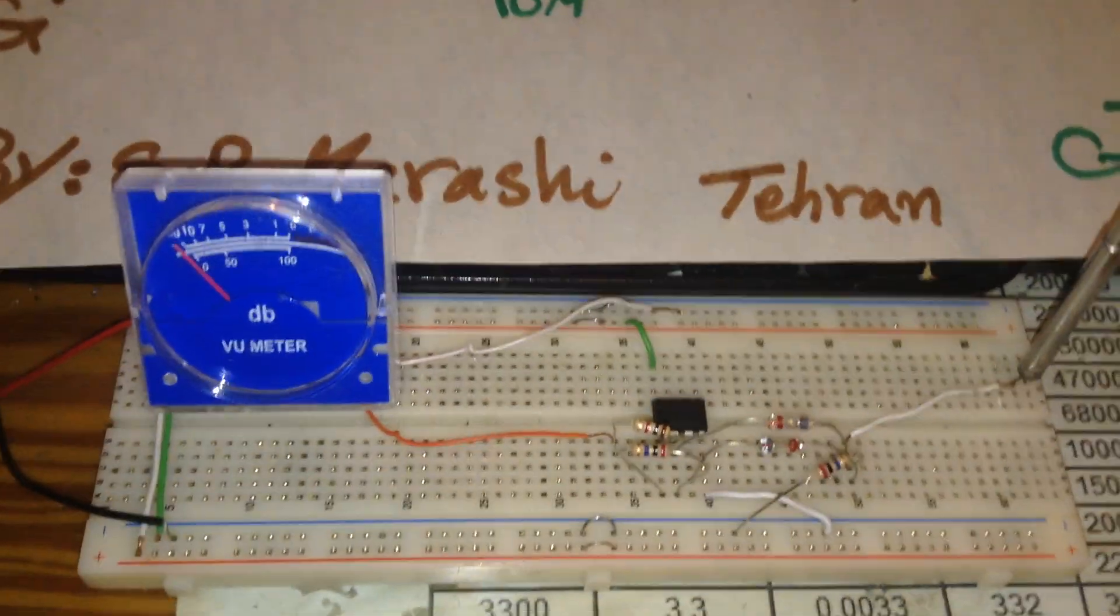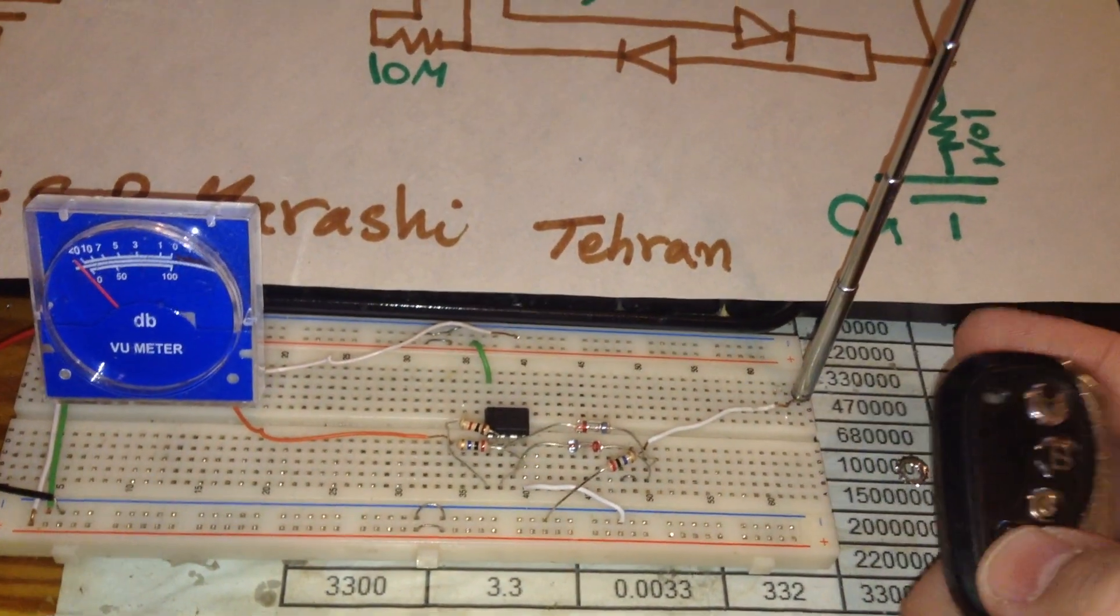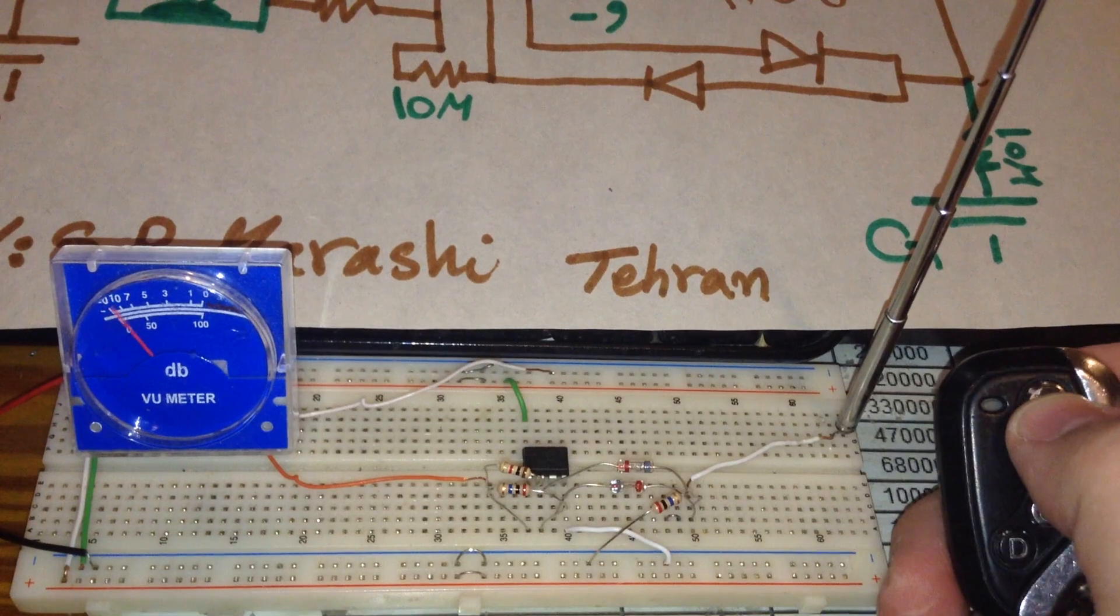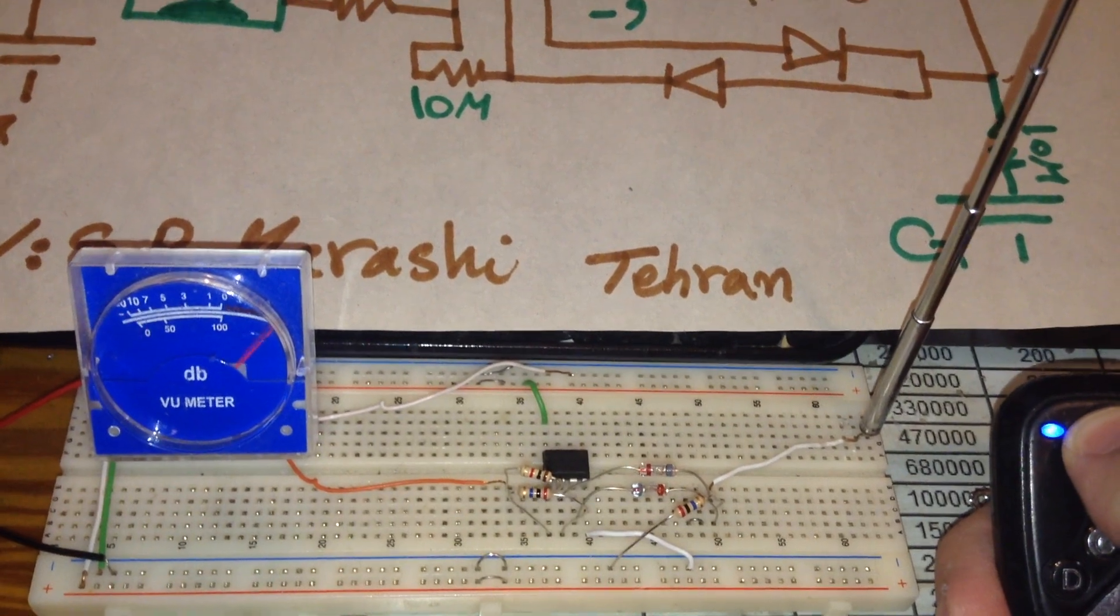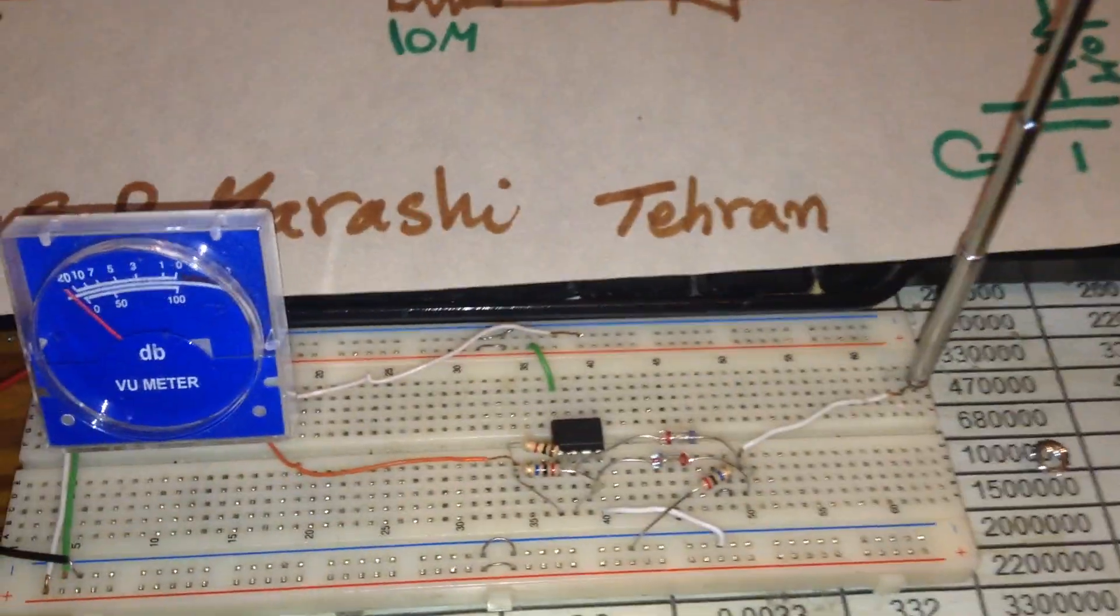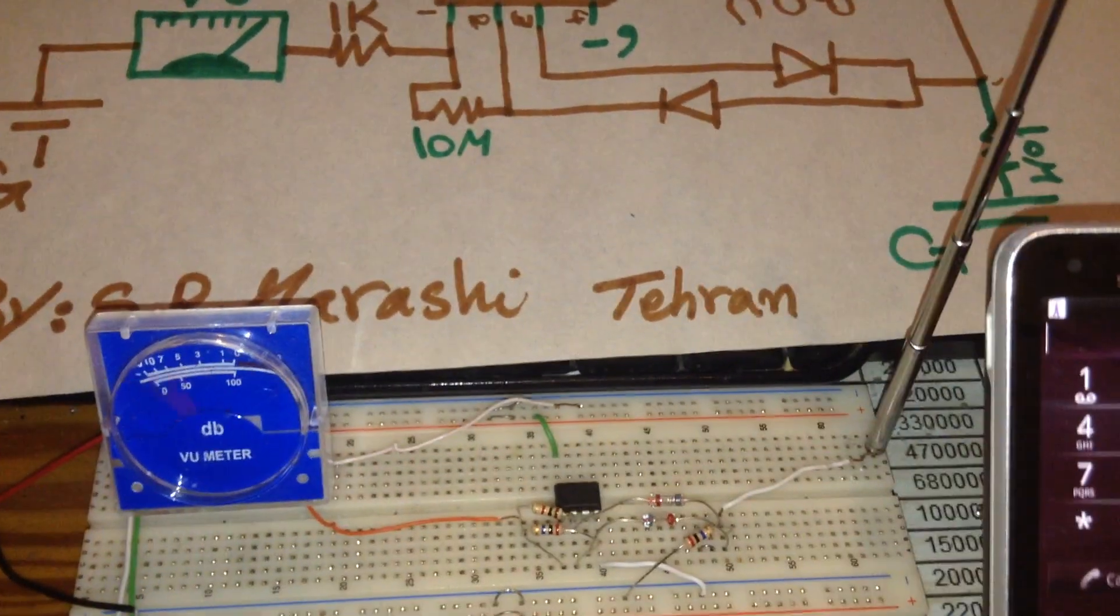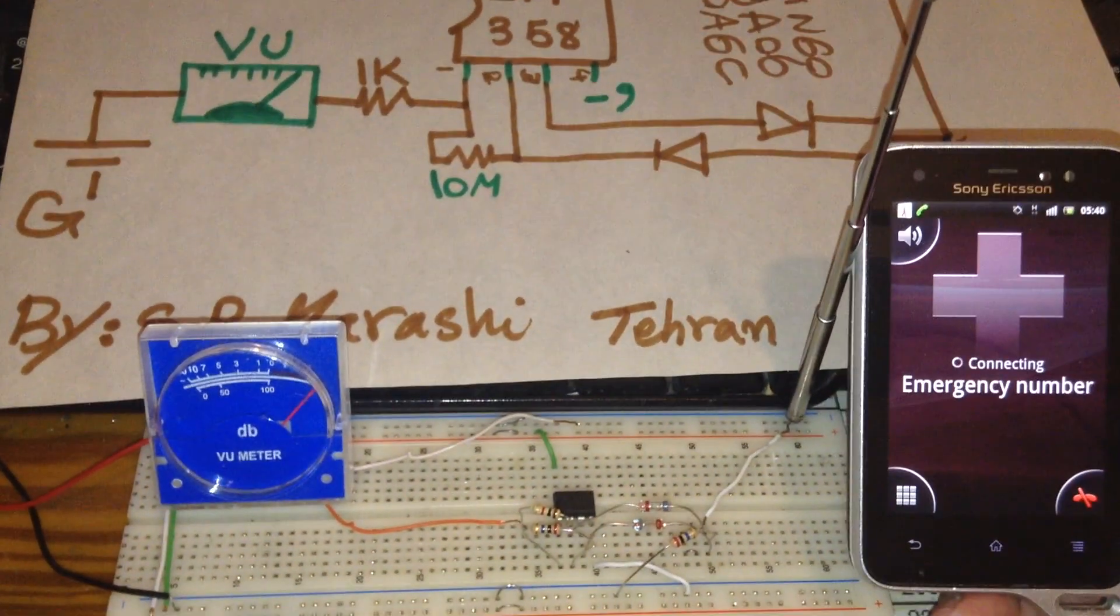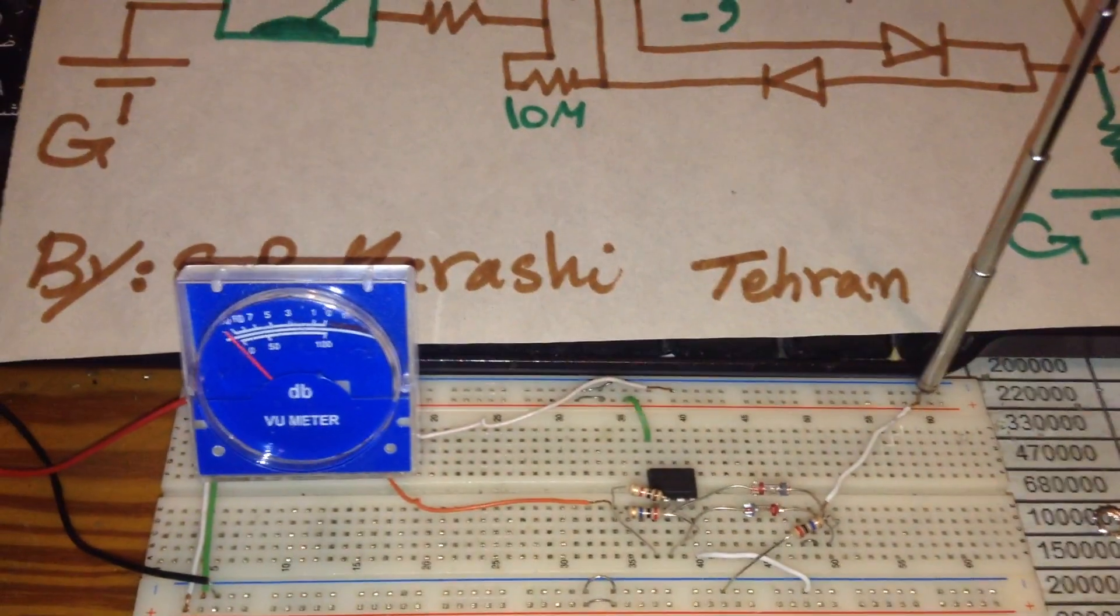Now the best test for this kind of project: the remote control for the dual parking key. I'm pressing the key. As you can see, the device can detect the 433 megahertz very nice. Also, I'm going to test with the mobile phone. As you can see, as soon as we're going to close to the device, the VU meter working pretty nice, very well.